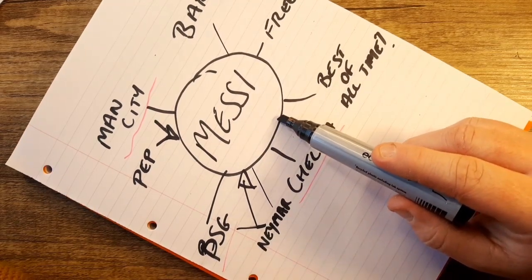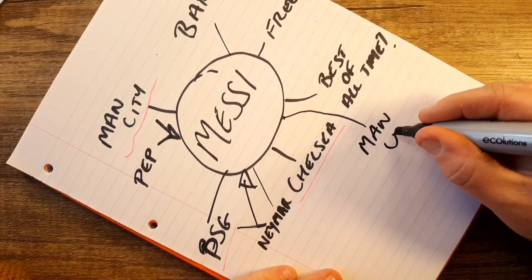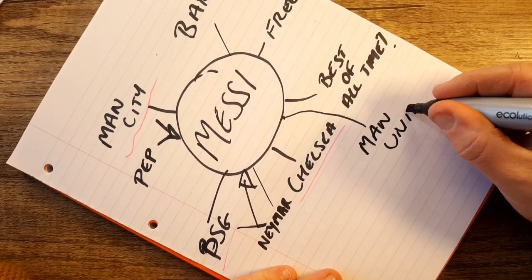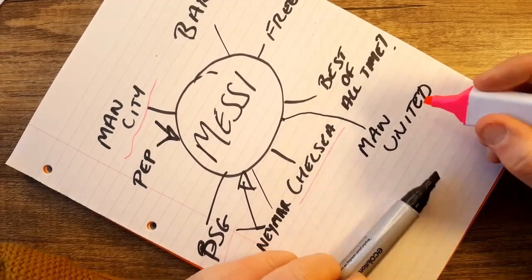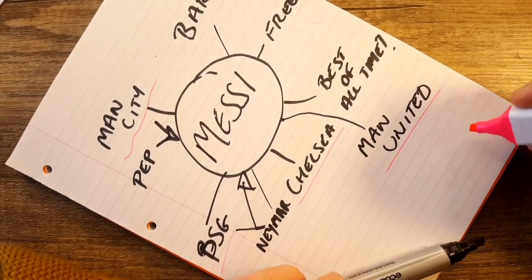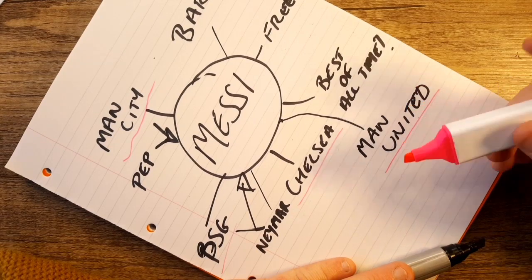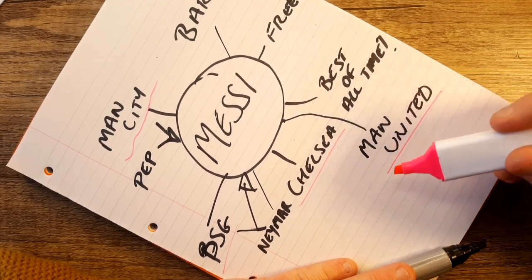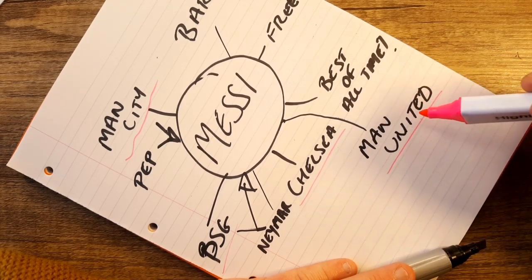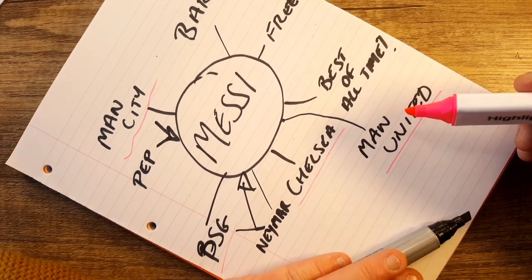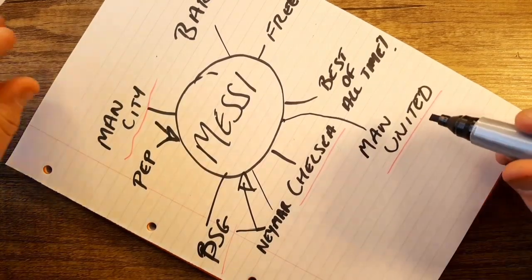Could Messi go link up with Pep once again? Could he be tempted by Man United? Now in all honesty, I don't see why the hell he'd be tempted to come to us, other than money and to say that he played for the best team ever in the Premier League. I don't think United will be in for Lionel Messi, which is a shame. Back under Fergie, I believe that would have been the case. You know he would have gone for him and possibly got him.